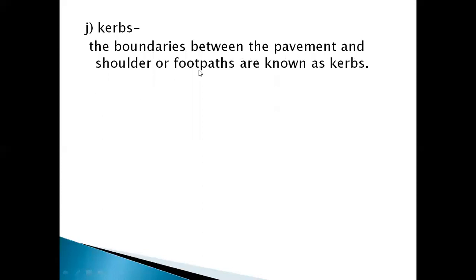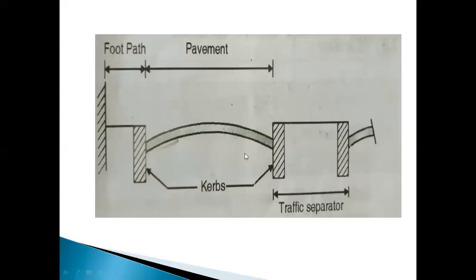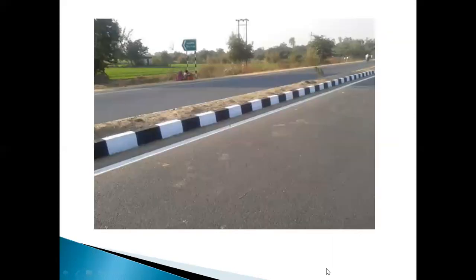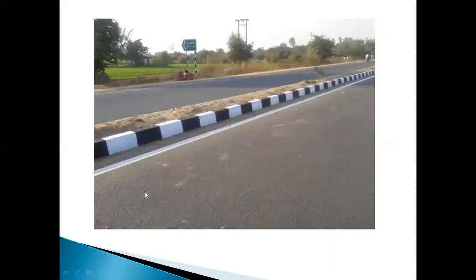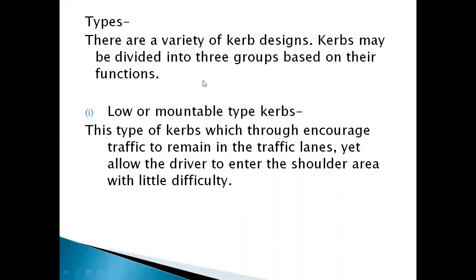The next term is kerb (curve). The boundary between the pavement and shoulder or footpath is known as a kerb. The types of kerbs can be divided into three groups based on their function. First is the low or mountable type kerb, which encourages traffic to remain in the traffic lanes yet allows the driver to enter the shoulder area with little difficulty — by using this kerb, traffic is not prevented from going outside the road.